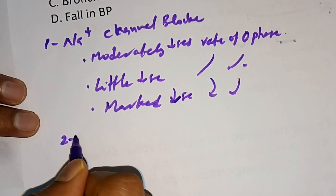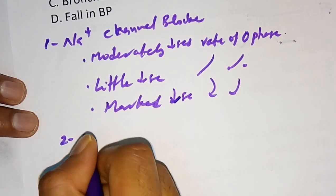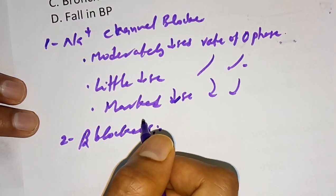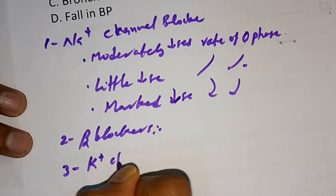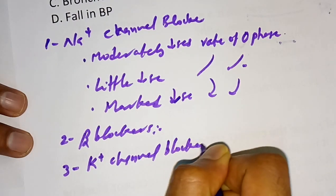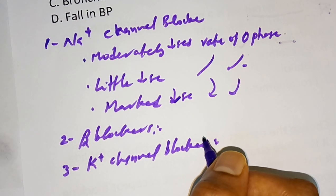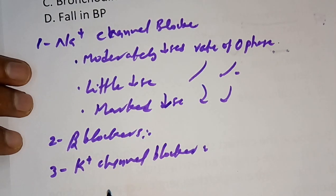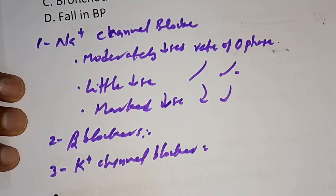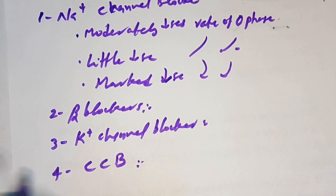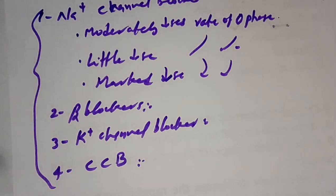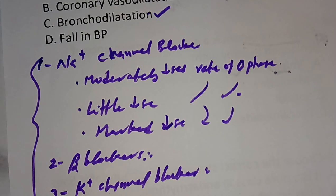The second category is beta blockers — class 2. Examples are propranolol, esmolol, and sotalol. The third category is potassium channel blockers — class 3. Examples are amiodarone, bretylium, dofetilide, and ibutilide. Amiodarone, as we studied, causes hypothyroidism. The fourth and last category is calcium channel blockers — class 4. Verapamil and diltiazem are the main drugs in this category.